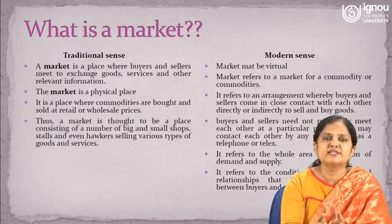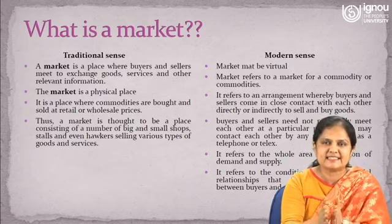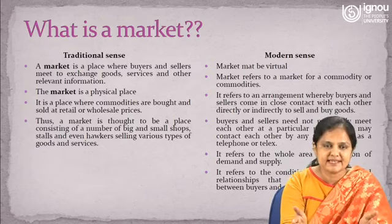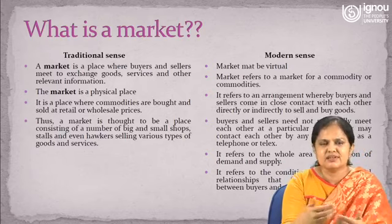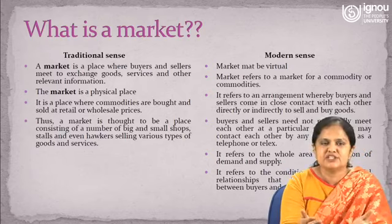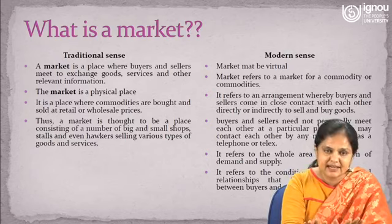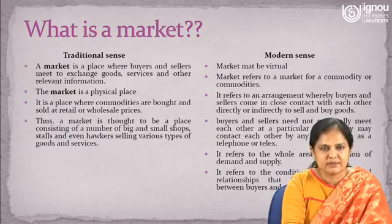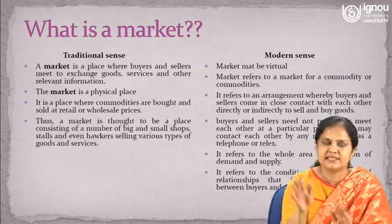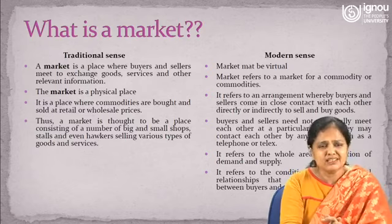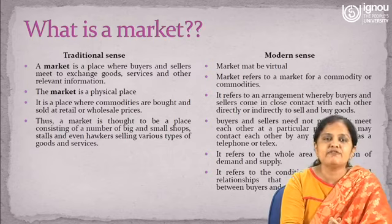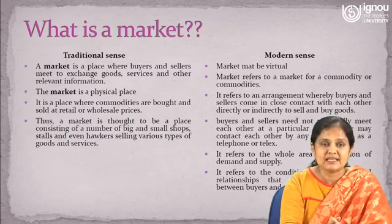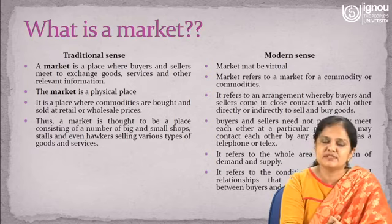In traditional sense, market is a physical place — a physical existence is necessary. There is a place where sellers are already there or come, and then buyers also come; they meet together and a transaction takes place between them. It is a place where commodities are bought and sold at retail or wholesale prices. In traditional sense, market is thought to be a place consisting of a number of big and small shops, stalls, and even hawkers selling various types of goods and services.